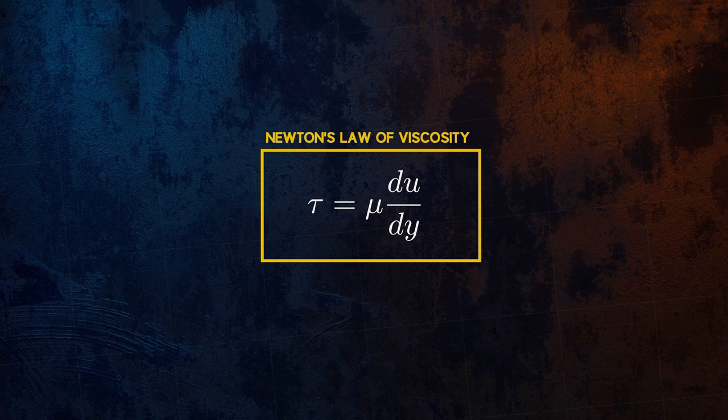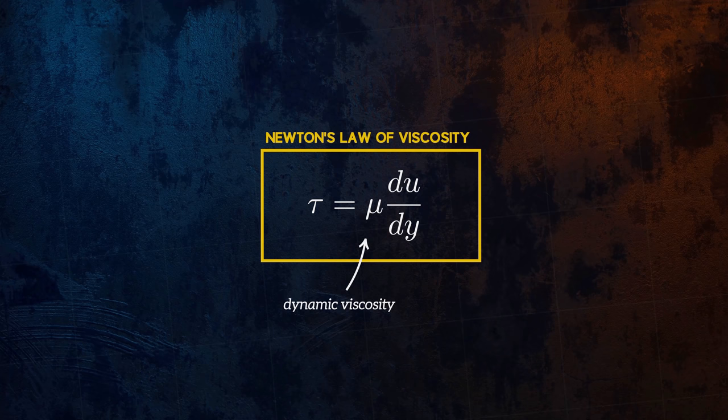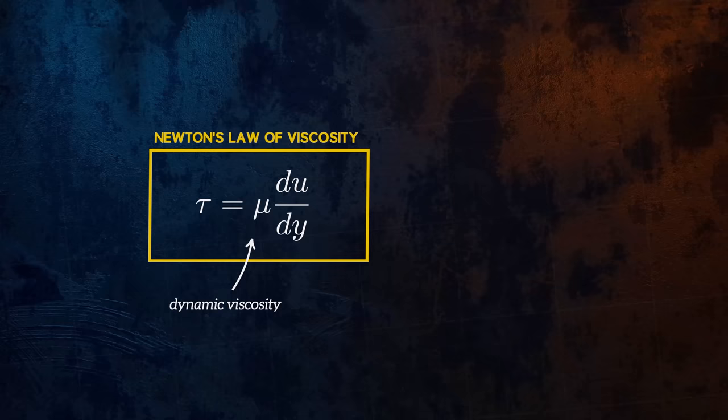The viscosity mu is sometimes called the dynamic viscosity, as this differentiates it from the kinematic viscosity, which is the dynamic viscosity divided by the fluid density.